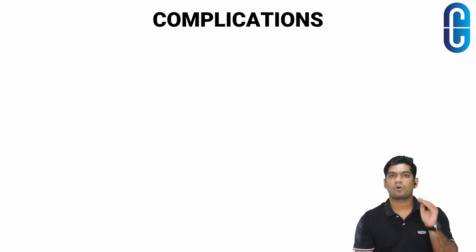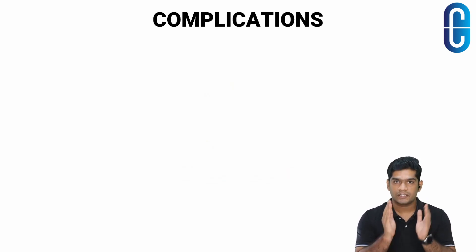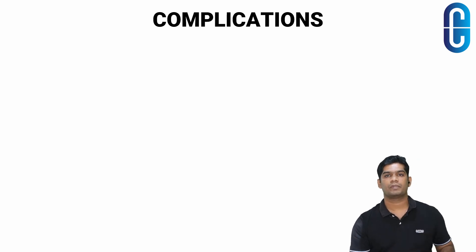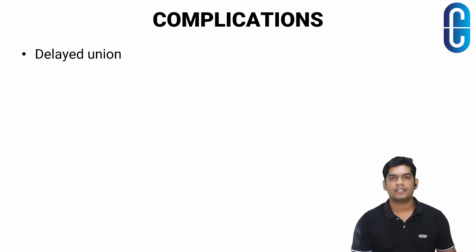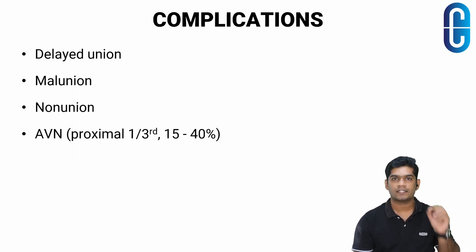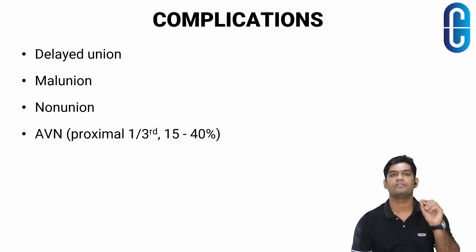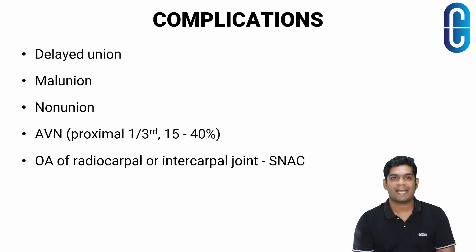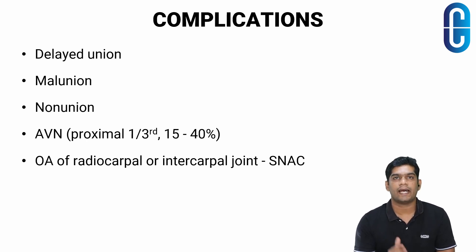The complications of scaphoid fracture include delayed union, malunion, non-union, and avascular necrosis — which occurs in 15 to 40 percent of cases involving the proximal one-third of the scaphoid. Finally there is osteoarthritis of the radiocarpal or intercarpal joint, commonly called SNAC or scaphoid non-union advanced collapse. These will be covered in detail in a separate video.